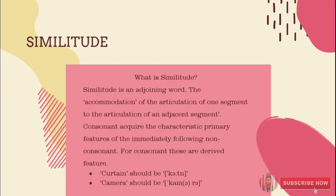The second material is similitude. What is similitude? Similitude is derived from the word 'similarity'. Abercrombie defines similitude as the accommodation of the articulation of one segment to the articulation of an adjacent segment. Consonants acquire the characteristic primary features of the immediately adjoining non-consonant. For consonants, these are derived features.